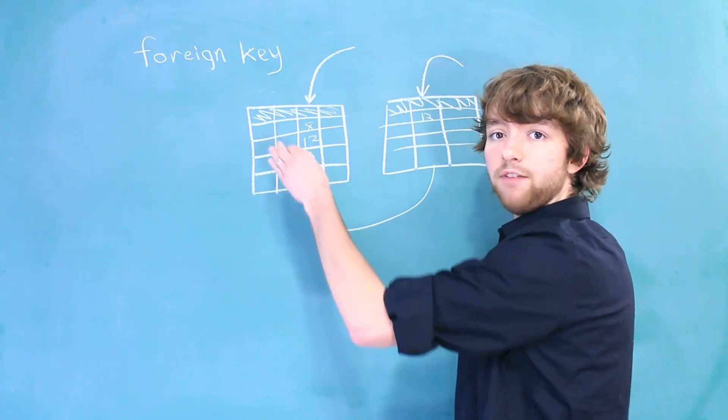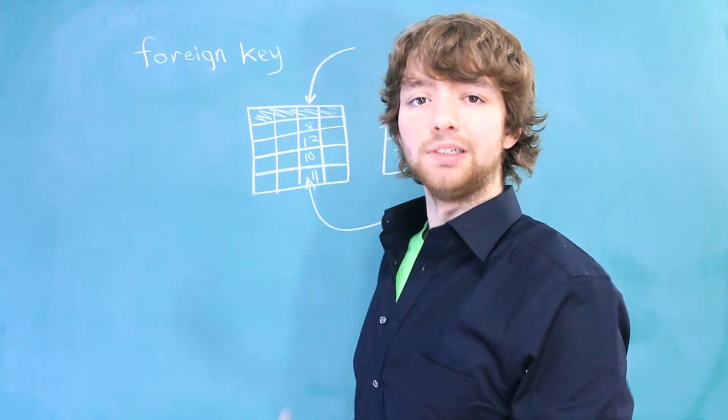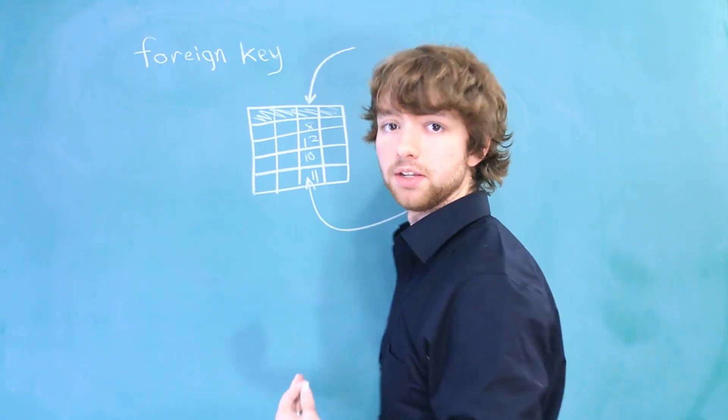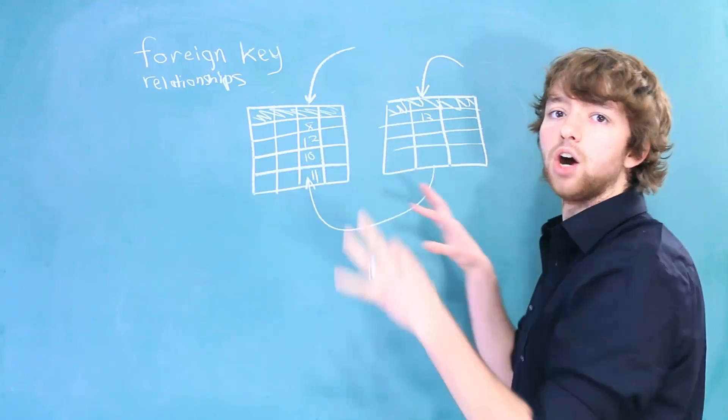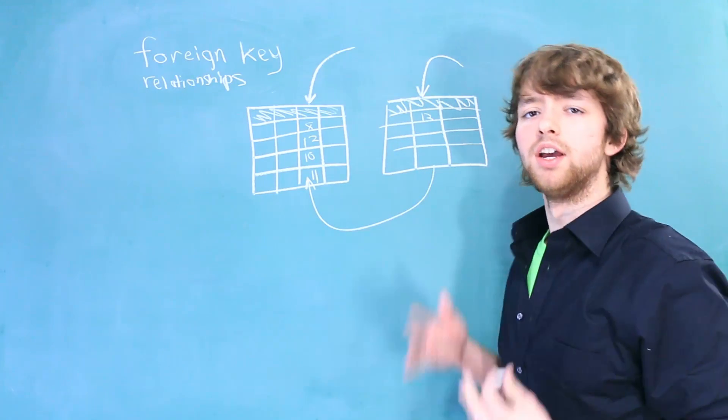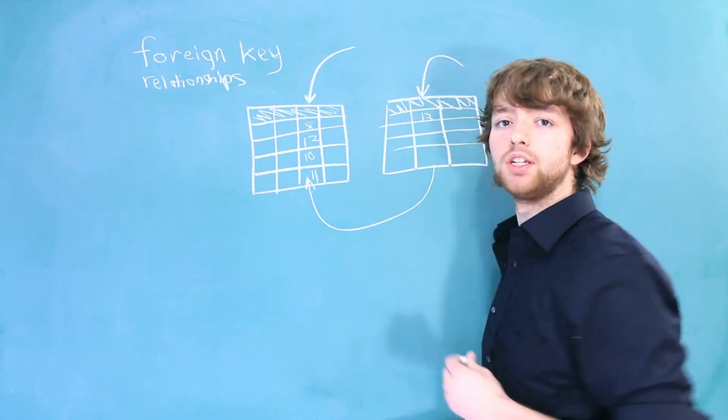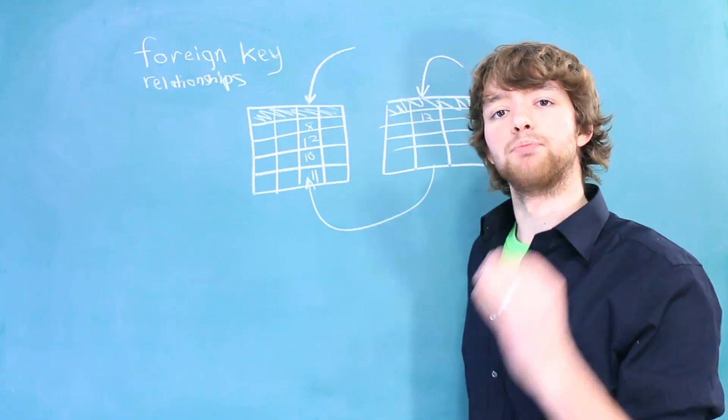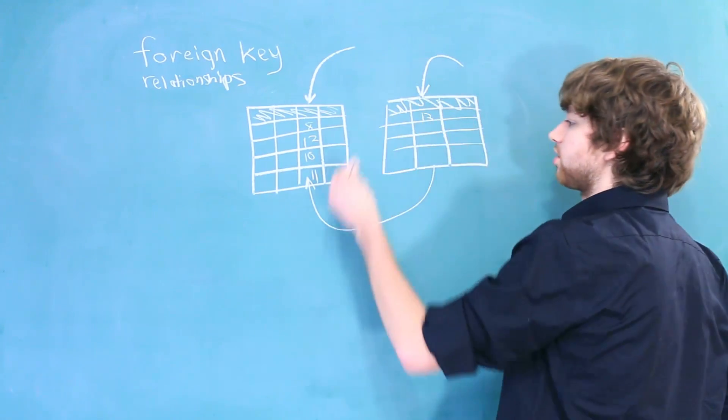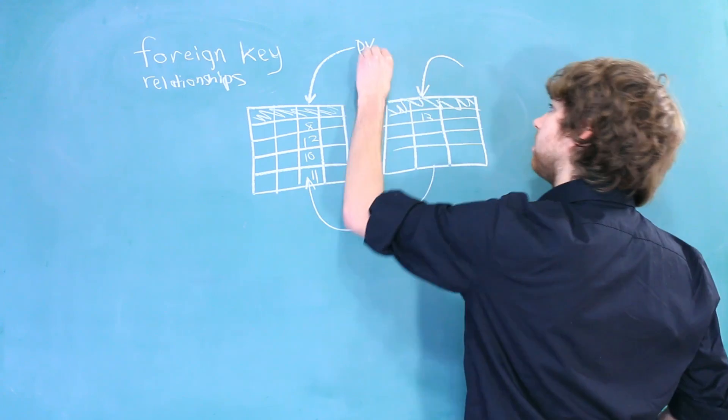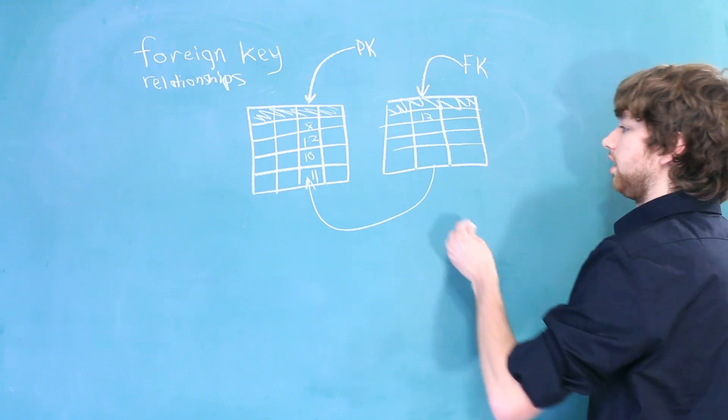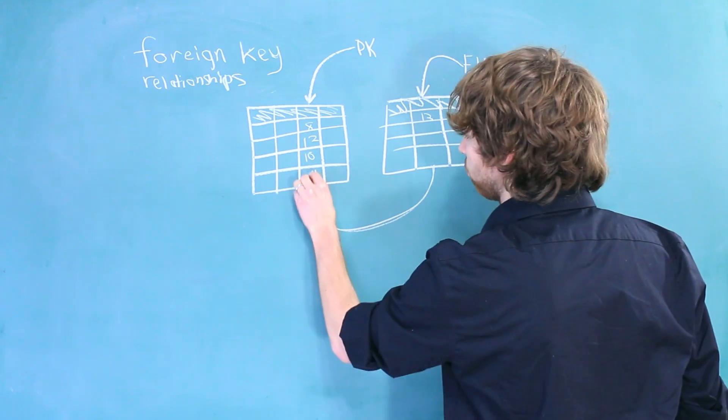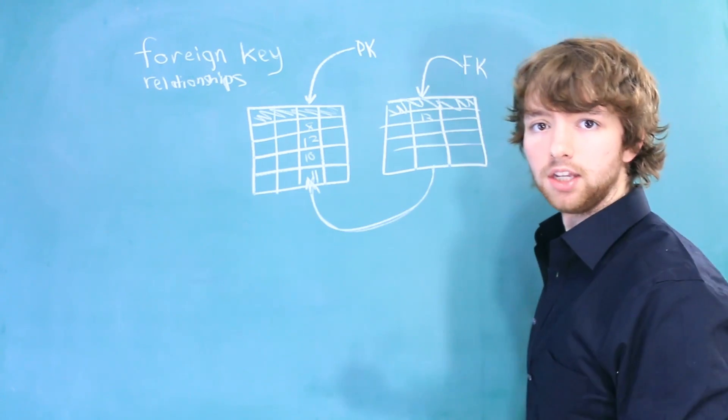The reason we create foreign keys is to create relationships in our database. Relationships are when two tables are connected somehow using a foreign key. Now, almost always a foreign key is going to reference a primary key. So in this situation, this would be the PK. This would be the FK. Primary key, foreign key. And the foreign key references the primary key.